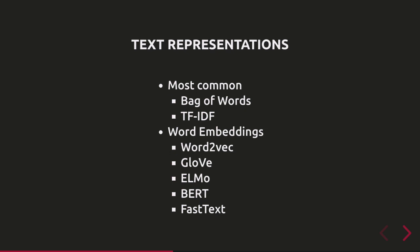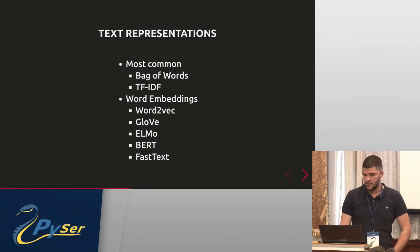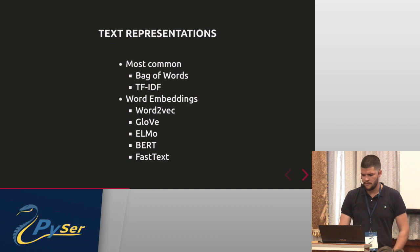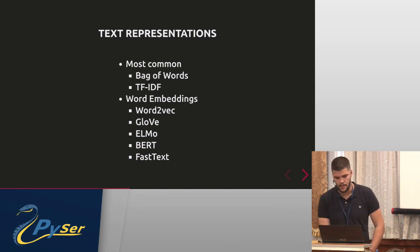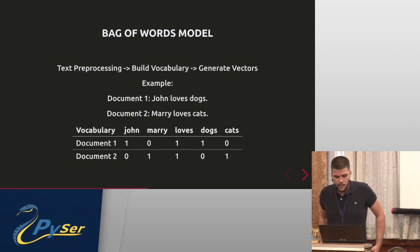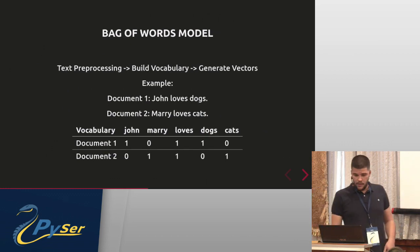For text representation, the most common approaches are Bag of Words and TF-IDF, which is the most widely used and easy to understand. Another approach is word embeddings, which I'm not going to cover today — it's based on neural networks and uses really heavyweight models that are not so easy to understand.